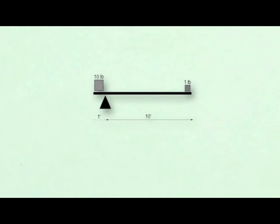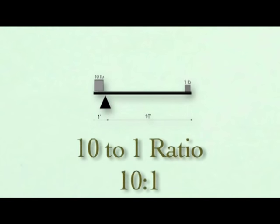Now if we move the weight on the left towards the pivot point, the situation changes. If a ten pound weight is one foot from the fulcrum on the left side, it will only take one pound to balance it ten feet from the fulcrum on the right side. This is a ten to one ratio.